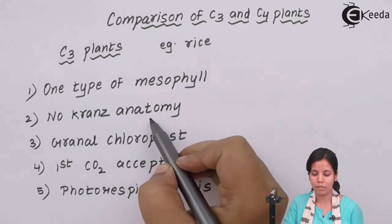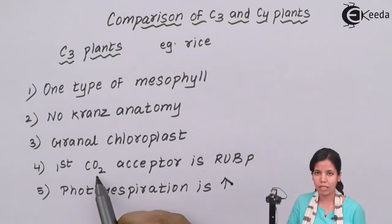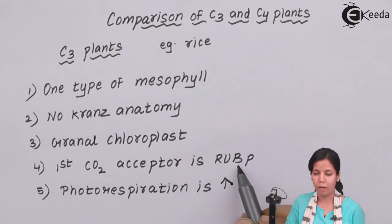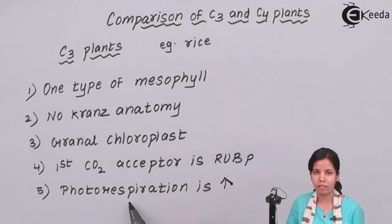The chloroplast that is present is granal type of chloroplast. The first carbon dioxide acceptor in C3 plants is RUBP, that is ribulose bisphosphate. Photorespiration is really really high in C3 plants.